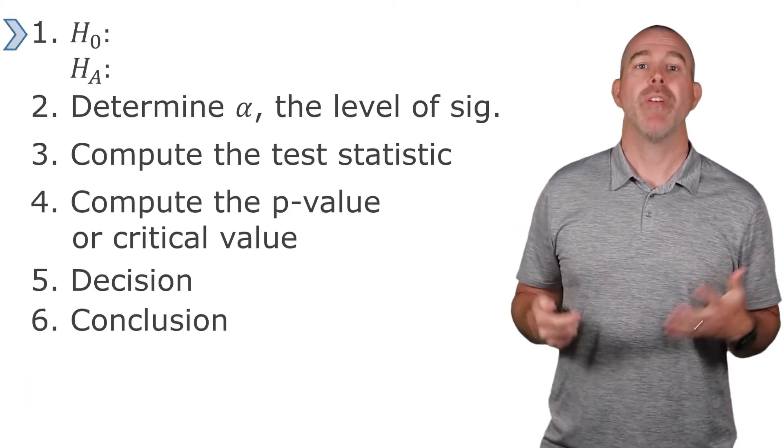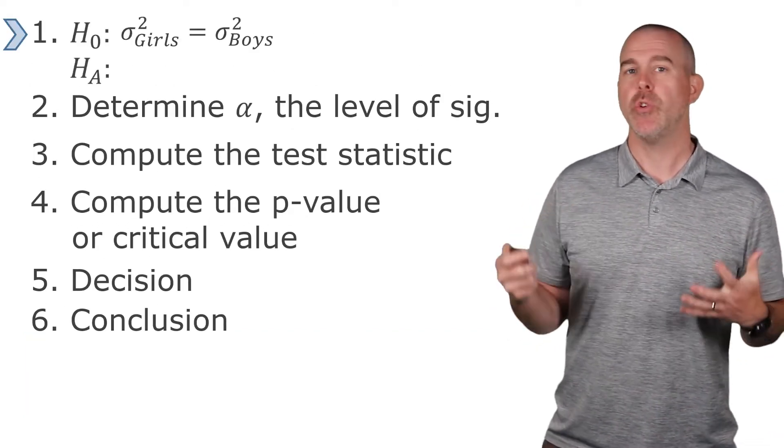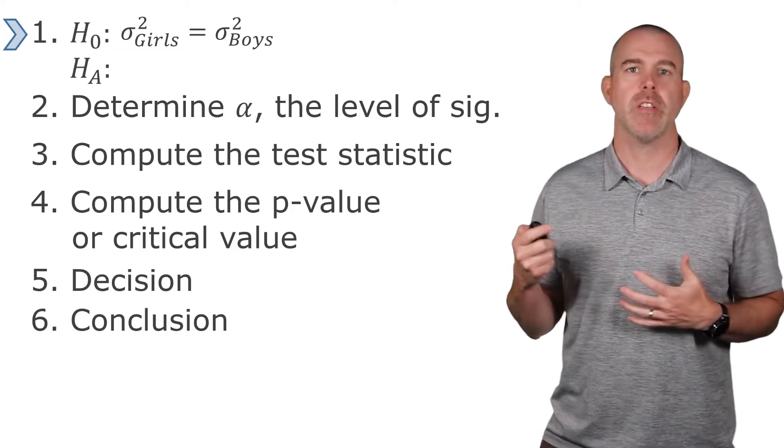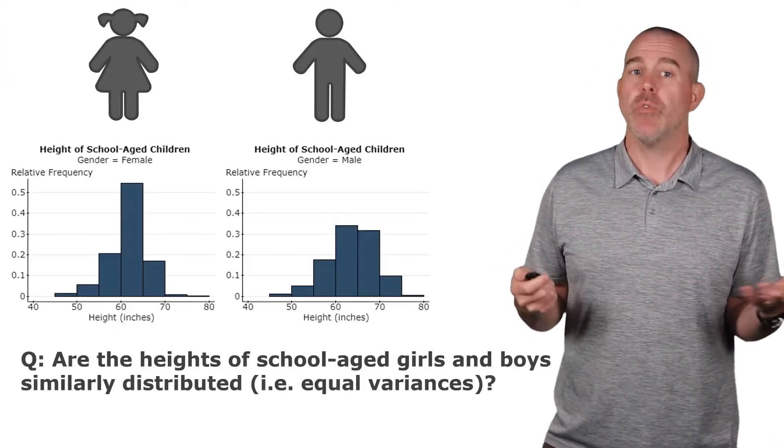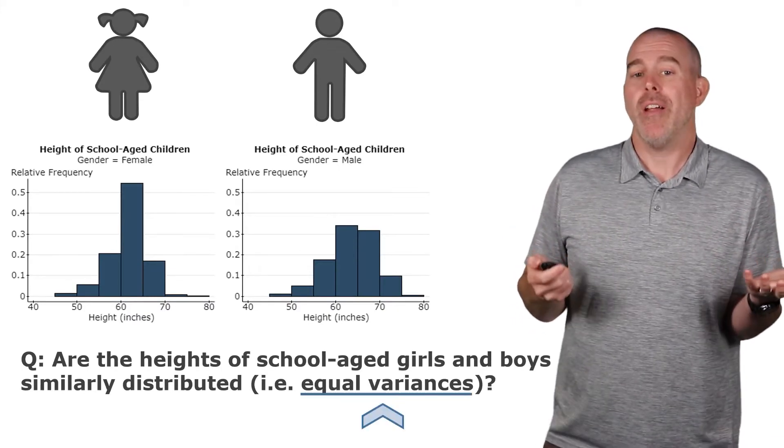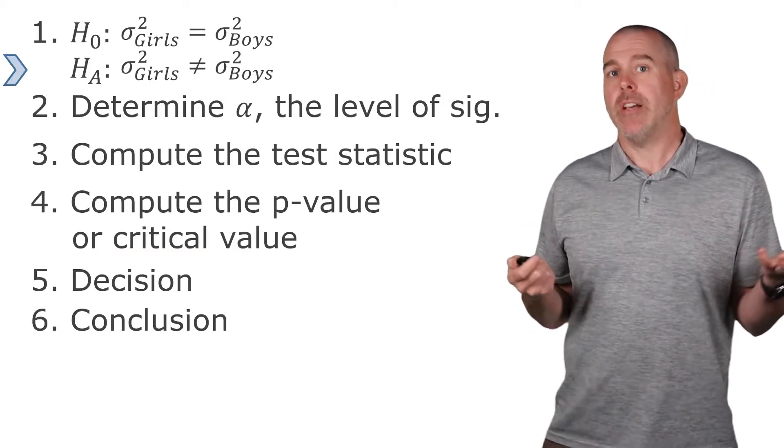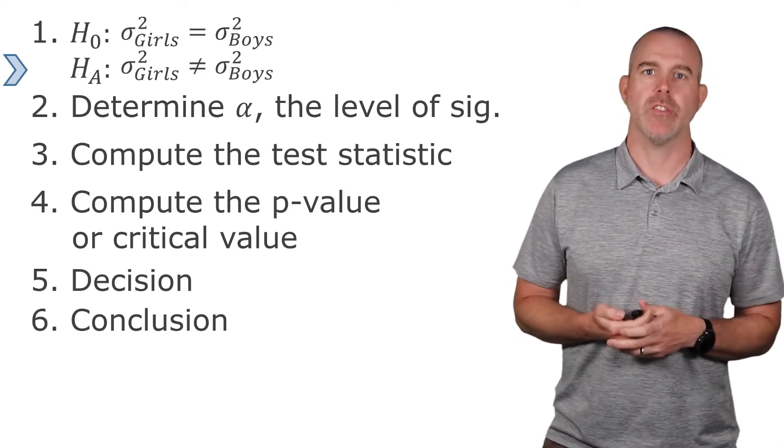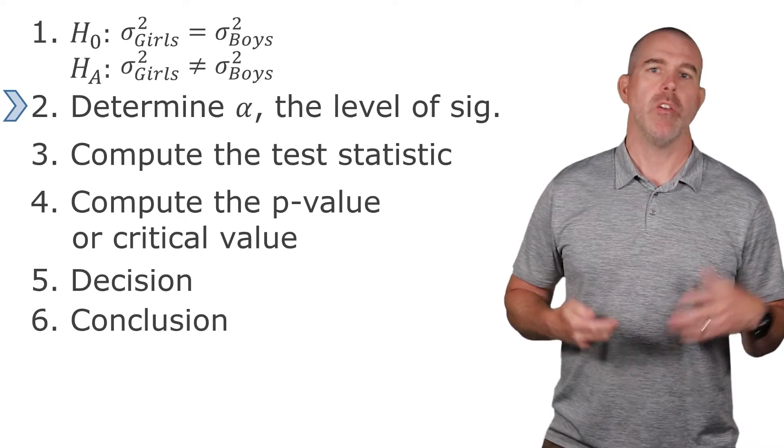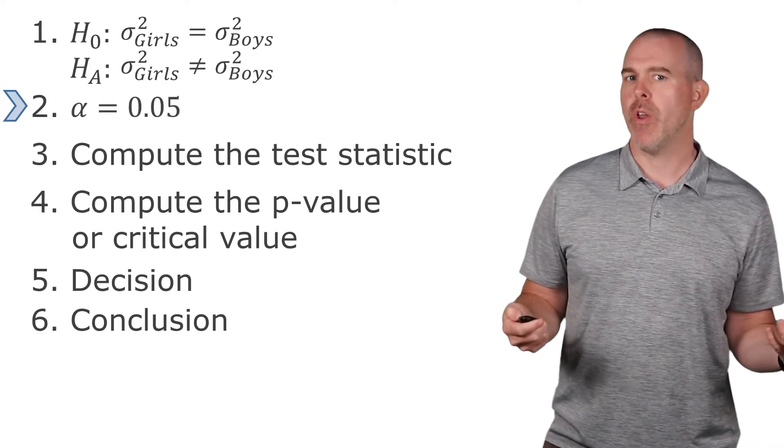So let's jump in and try it. We've got our null hypothesis is that the two variances are equal. The variance for girls is equal to the variance for boys. Our alternative, we're just kind of wondering, do they have equal variances? So the alternative would be that they're not equal to. So it's not a greater than or a less than here. It's just a not equal to. You know our alpha. We'll just continue with our 0.05.